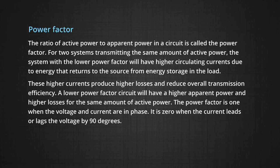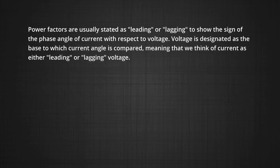We can say that the power factor is one when the voltage and current are in phase. It is zero when the current leads or lags the voltage by 90 degrees. The power factors are usually stated as leading or lagging to show the sign of the phase angle of current with respect to voltage. That is voltage is designated as the base to which current angle is compared to be considered meaning that we think of current as either leading or lagging voltage.